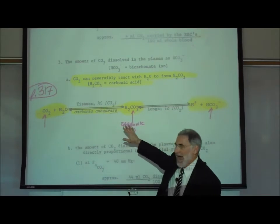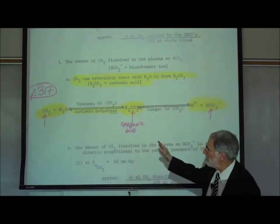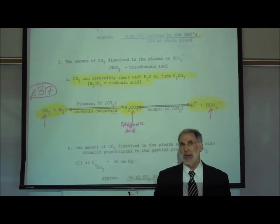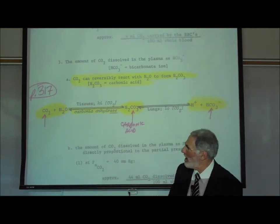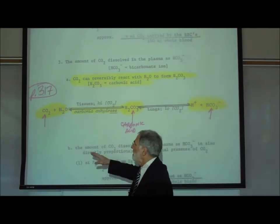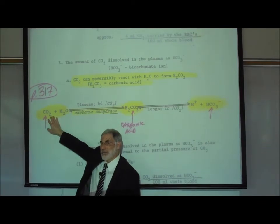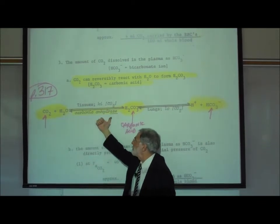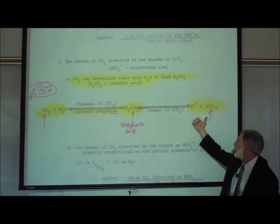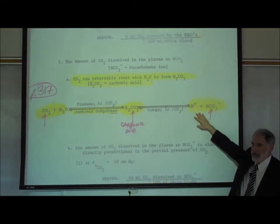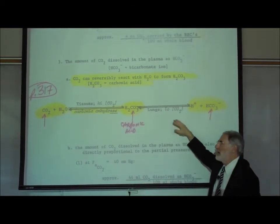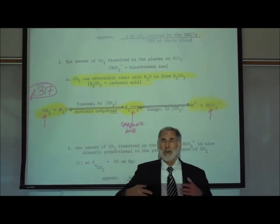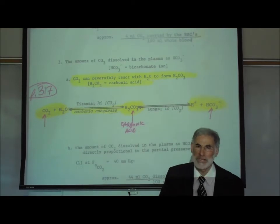This is a reversible reaction, and the direction of the reaction is determined by the relative amounts of reactants and products. When there is an increasing level of carbon dioxide entering the bloodstream, it drives the reaction in this direction, increasing the amount of hydrogen ion and bicarbonate. That's what happens out in the tissues, where carbon dioxide is entering the bloodstream.